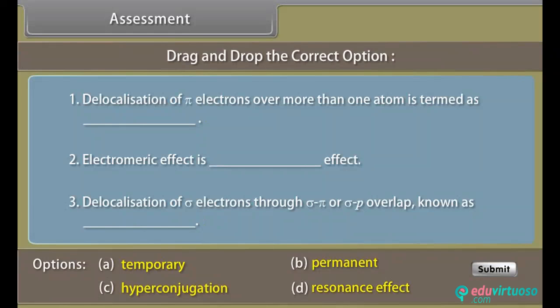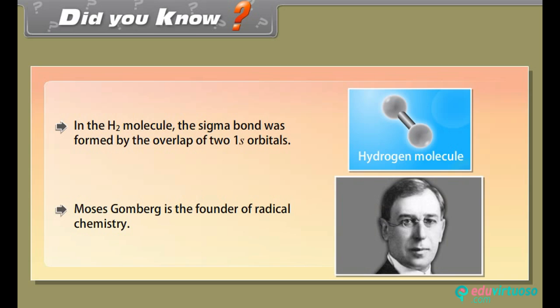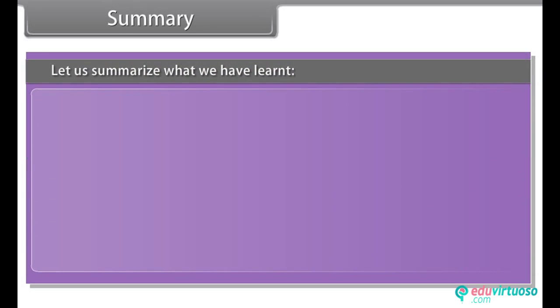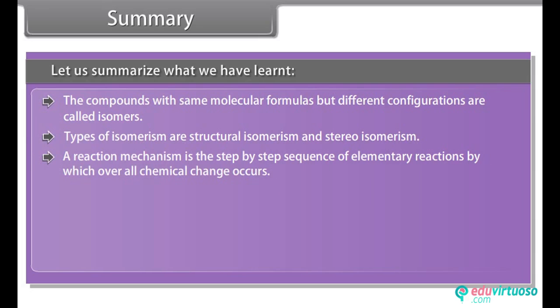Before proceeding further, let us assess how much you have learned — drag and drop the correct option. Did you know that in the hydrogen molecule, the sigma bond is formed by the overlap of two 1s orbitals? Moses Gomberg is the founder of radical chemistry. In summary: compounds with the same molecular formulas but different configurations are called isomers, and types of isomerism include structural isomerism and stereoisomerism. A reaction mechanism is the step-by-step sequence of elementary reactions by which overall chemical change occurs.